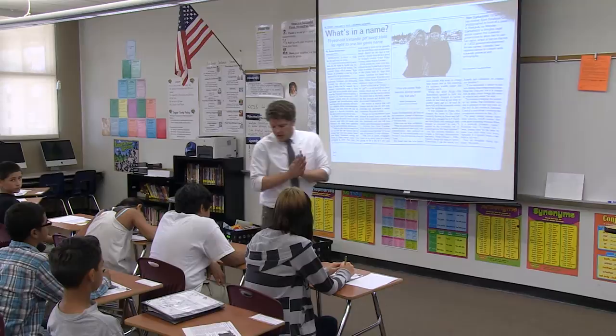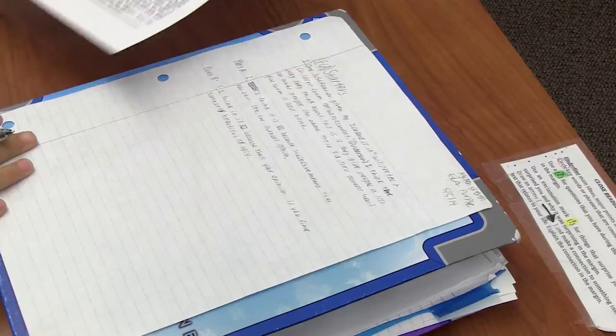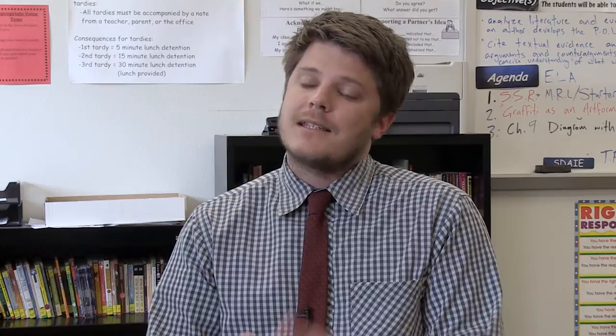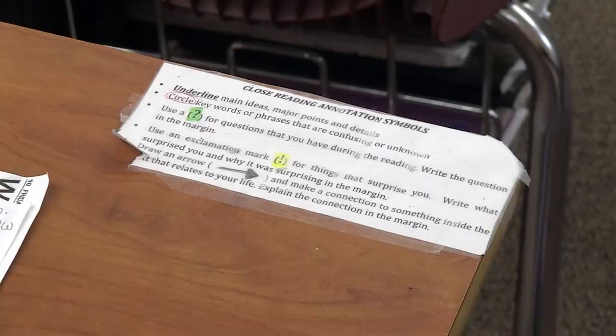This is going to be our starter for this week. It's called 'What's in a Name' by Anna Anderson. I wanted to get more comfortable and familiar with Common Core. Depth of knowledge is an important tool, an important piece of Common Core — text-dependent questions, annotating and close reading. I tried to figure out a way to put those pieces all together.